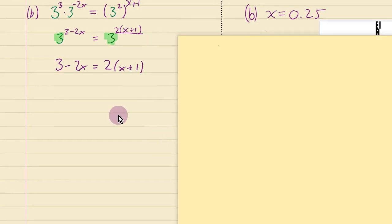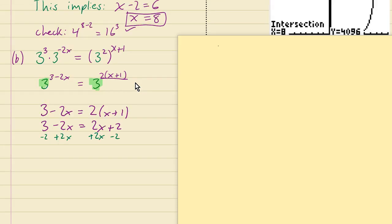And we could distribute the 2 into there and you get 3 minus 2x is 2x plus 2. Then when you add 2x to both sides that will give you 4x on the right and no x's on the left and then we've got that equal to 1. When we divide both sides by 4 you'll get 1 over 4 equals x.